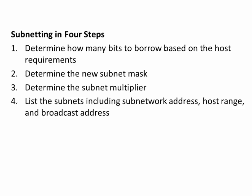Let's break down subnetting into four simple steps. Step 1: determine how many bits to borrow based on the host requirements. Step 2: determine the new subnet mask based on the host requirements from Step 1. Step 3: determine the subnet multiplier, also known as the magic number. Step 4: list all of the subnets we've created, including the subnetwork addresses, the host ranges, and all of the broadcast addresses.